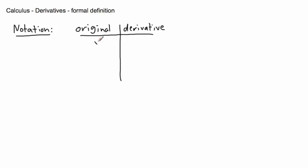So if your original is like y equals something, then the derivative might be written as y prime. Sometimes I write it with a little y with a prime. Now that doesn't have to be y and y prime — it could be u and u prime, or g and g prime. We use all sorts of letters; whatever letter we use to denote the original equation, the derivative is often written with a prime.